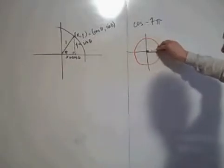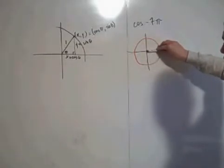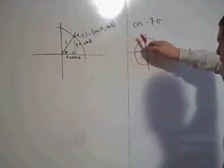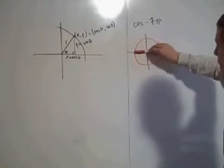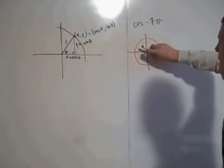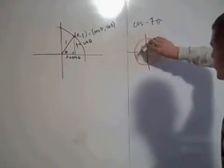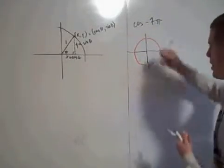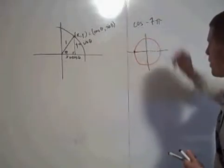So here we're at theta equals 0. There's negative 1π, negative 2π, negative 3π, negative 4π, negative 5π, negative 6π, negative 7π. It is this point right here. That's negative 7π.